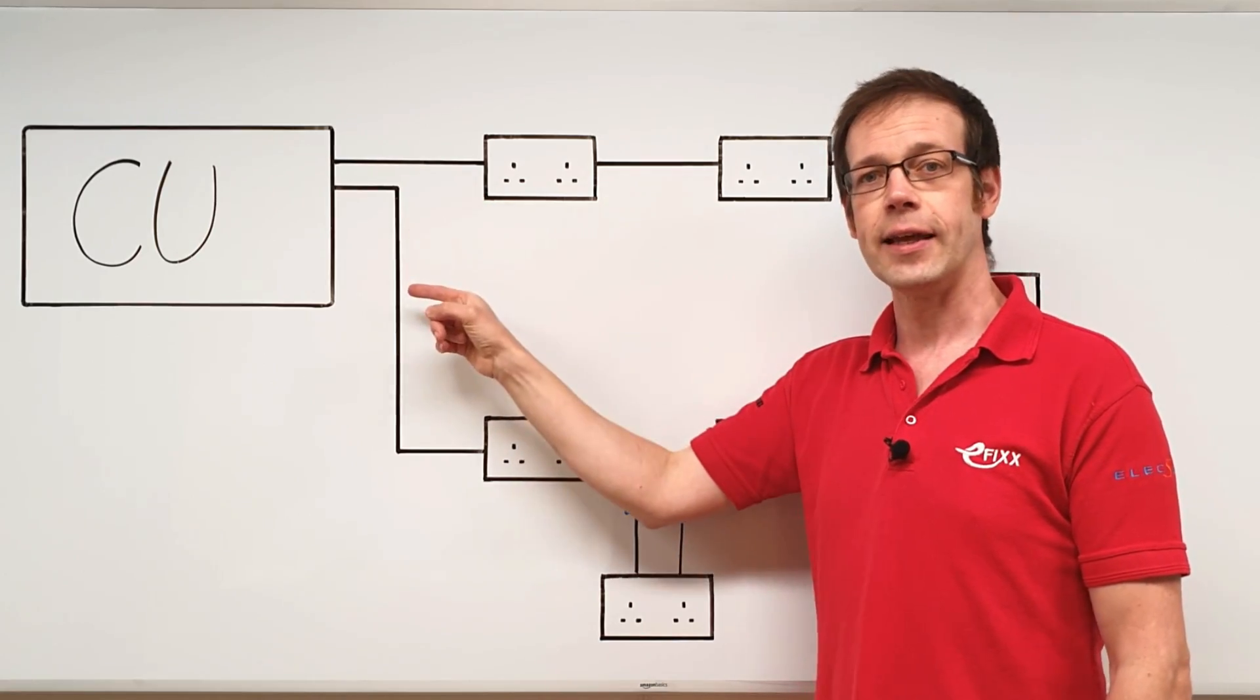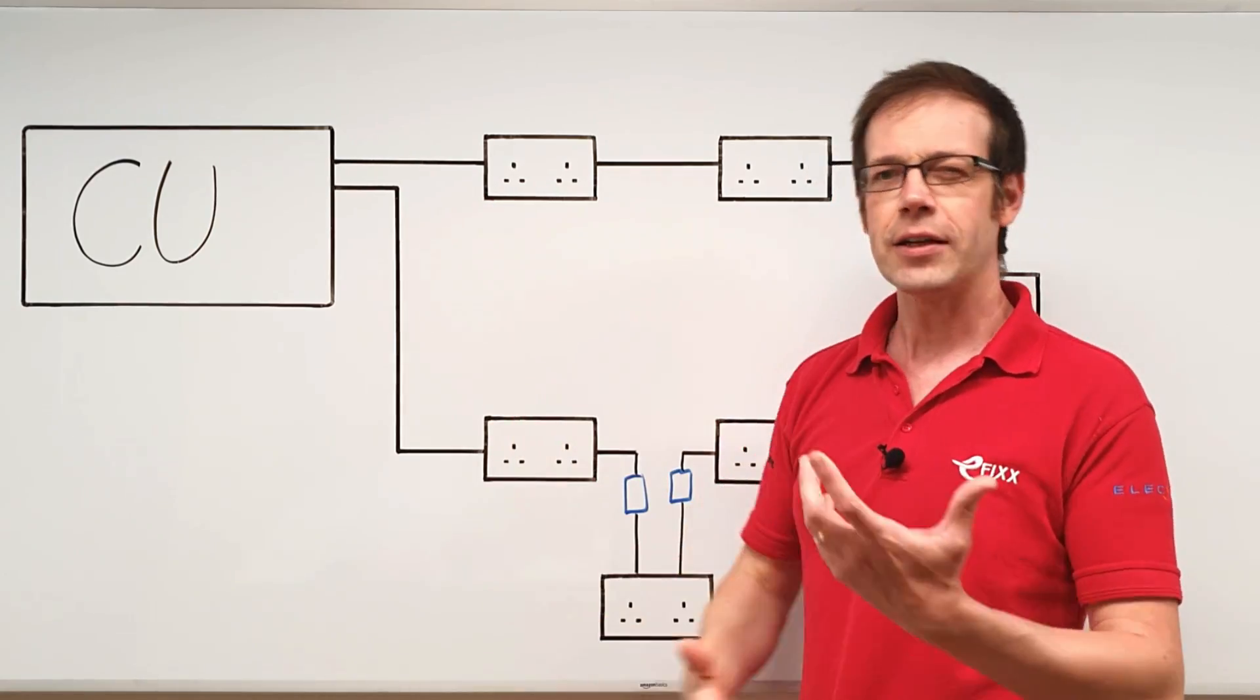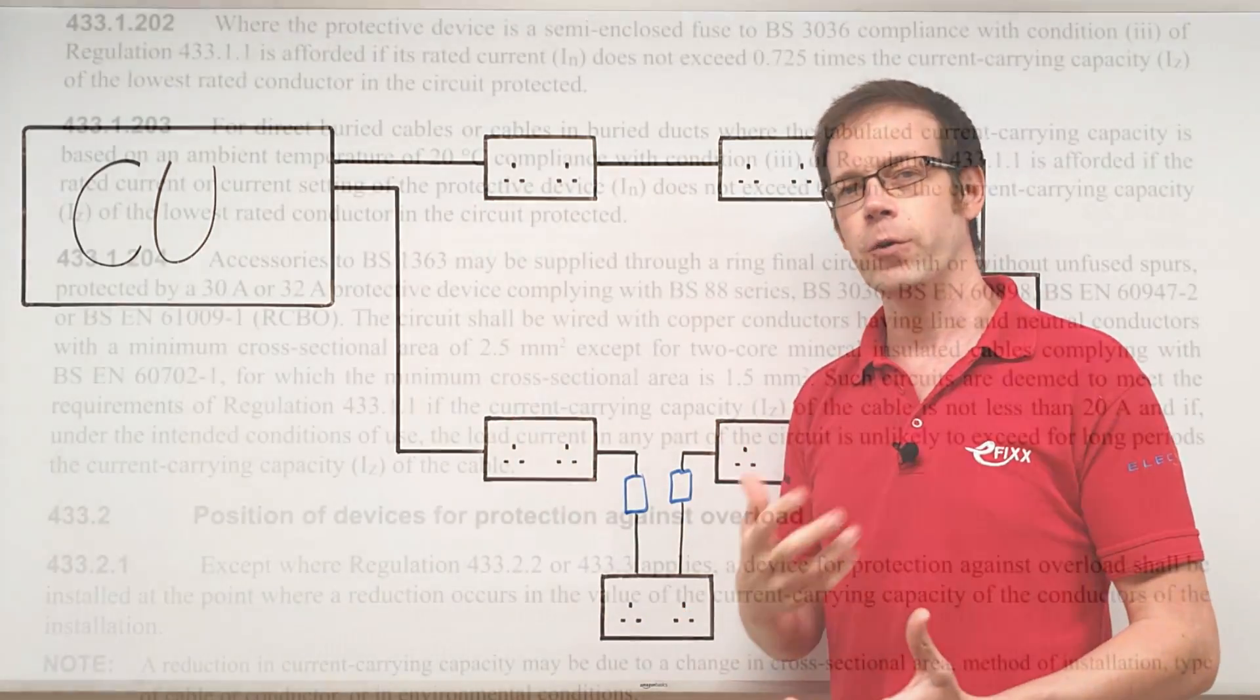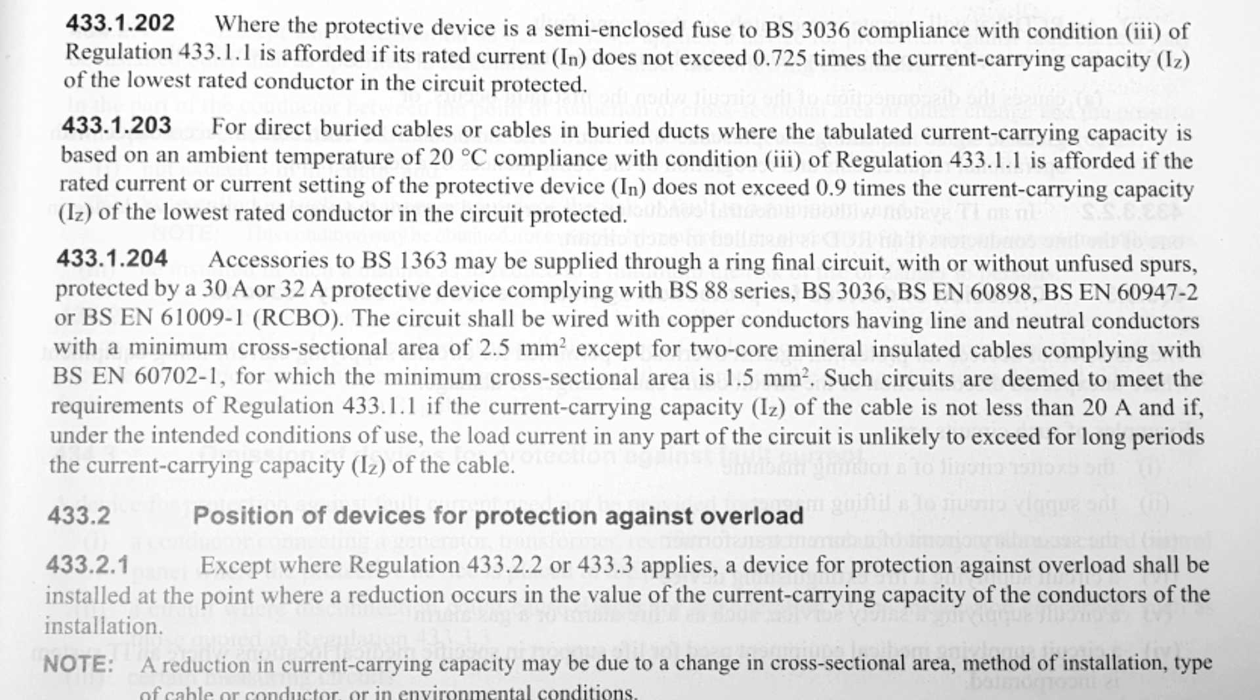This fact is acknowledged and allowed for in Regulation 433.1.204, where it states—and I'll just highlight the key points here—accessories to BS 1363 may be supplied through a ring final circuit protected by a 32 amp protective device. The circuit shall be wired with copper conductors having line and neutral conductors with a minimum cross-sectional area of 2.5 millimeters squared.